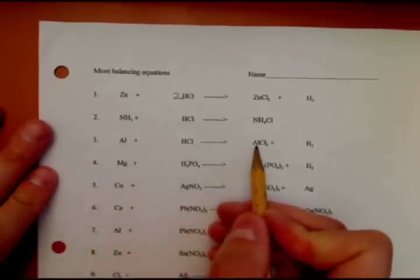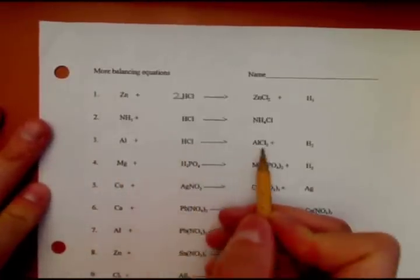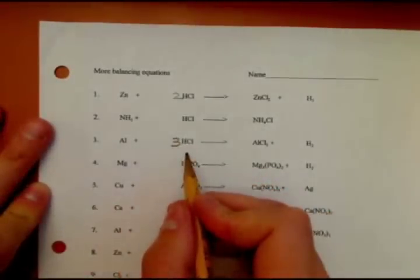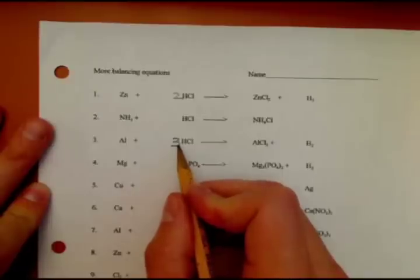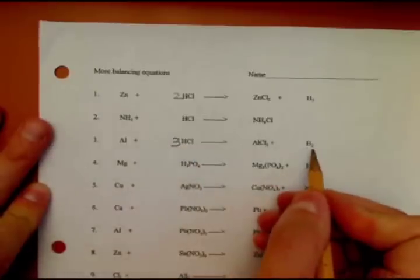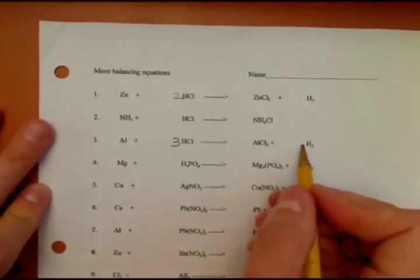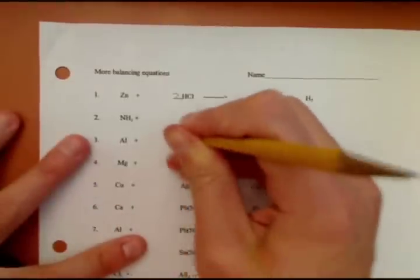Alright, next one. Aluminum, one aluminum. Okay, here you only have one chlorine, here there's three. That means you need to put a 3 right there. Well, you have three chlorine over three hydrogen over here and two hydrogen over there. The way I think about this is, what's the least common multiple of three and two? Six. That's why you never do these in pen.